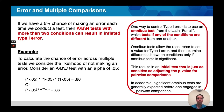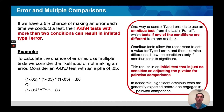One way of controlling type 1 error is with an omnibus test. Omnibus is Latin for 'all,' and this tests if any of these conditions are different from one another. In continuous data, the common omnibus test is an ANOVA. But with categorical data, what we would actually use is a chi-square test. An omnibus test allows researchers to test for a difference among all conditions simultaneously, and only if we find a significant difference do we go in and compare each one of our conditions.